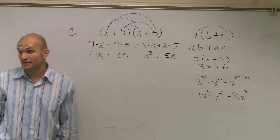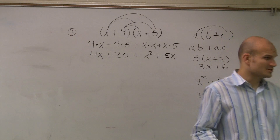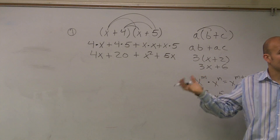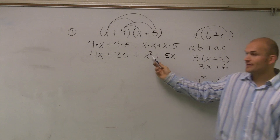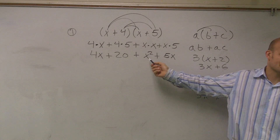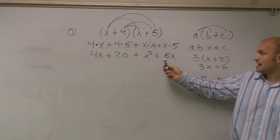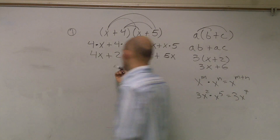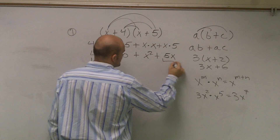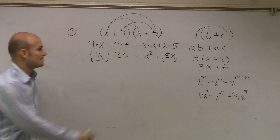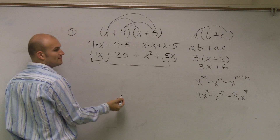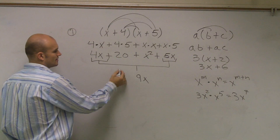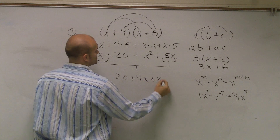Now we need to see if we can combine like terms. Combining like terms means whenever you have the exact same term or same base with the same exponent. Do I have any other x squareds? No. Any standalone numbers? No. But this 4x and 5x have the same base x with exponent 1, so I can combine them: 4x plus 5x gives me 9x. Then bring down the 20 and x squared.